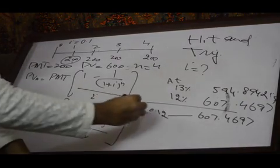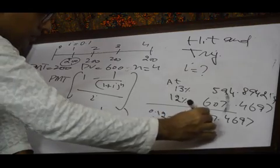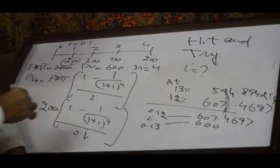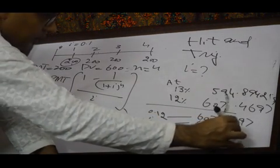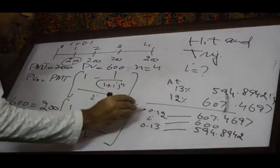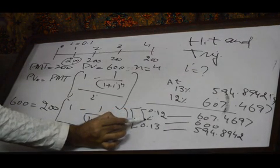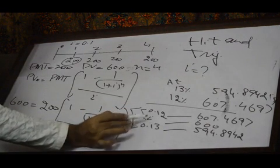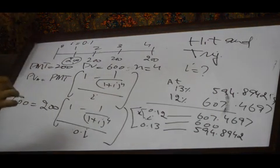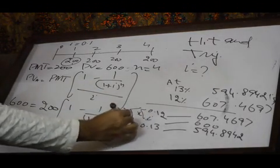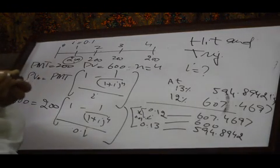The value of i is unknown. We have found that at 12% the present value is 607.4697 and at 13% it is 594.8942. The actual value we need is 600. The difference between i and 0.12, and between 0.12 and 0.13, is 0.01. We call the unknown portion x. So x is the difference between 0.12 and i, and we know i is greater than 0.12 and less than 0.13.